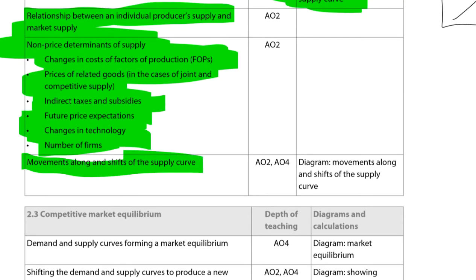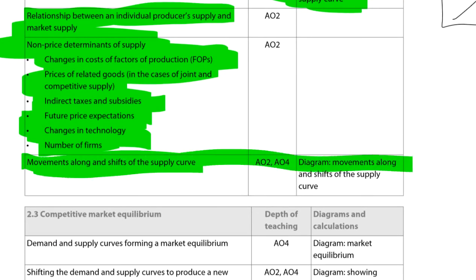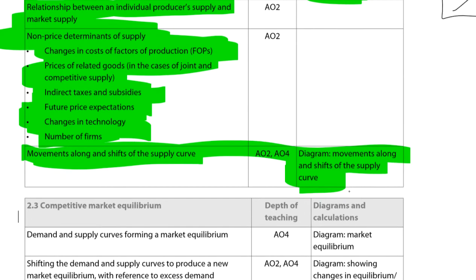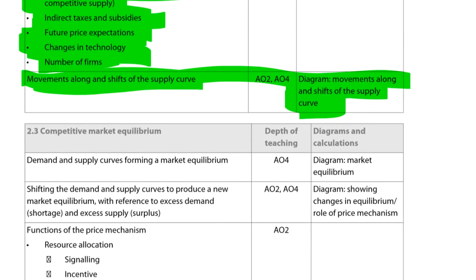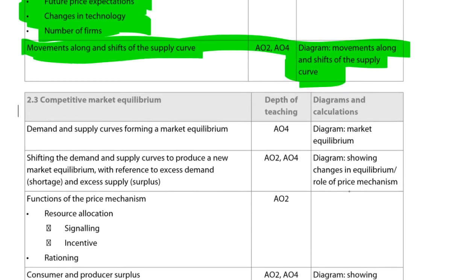It's important to distinguish between an increase in quantity supplied — which is a movement along the supply curve due to a price change — and an increase in supply, which is a shift of the entire curve. This distinction could come up as a full-mark question on paper three, and you need to be able to explain that one is a shift in the curve and one is a movement along the curve.